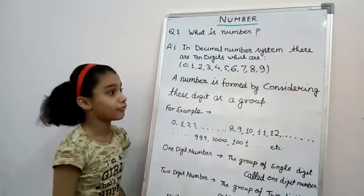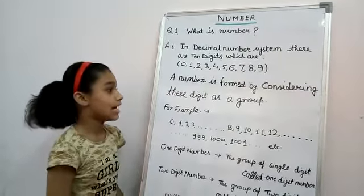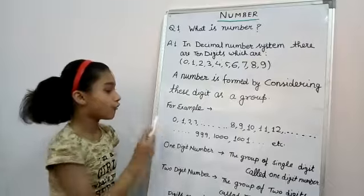A number is formed by considering these digits as a group. These digits are also called numerals. For example: